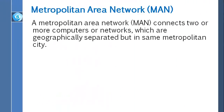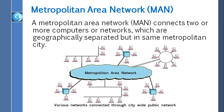Next, we talk about metropolitan area networks. A MAN, or metropolitan area network, connects two or more computers or networks which are geographically separated but in the same metropolitan city. A MAN usually interconnects a number of local area networks using a high-capacity backbone technology such as fiber optic cable, and provides uplink services to wide area networks and the internet. MANs are larger than local area networks but smaller than wide area networks, which we are going to explain next.